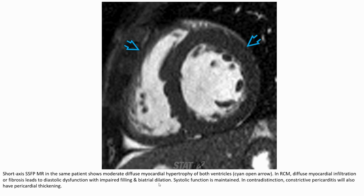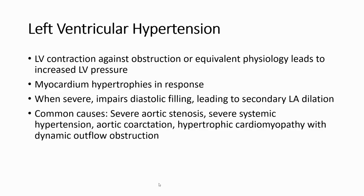Distinction: constrictive pericarditis will also show bi-atrial dilatation. Left ventricular hypertension: obstruction or equivalent physiology leads to increased left ventricular pressure and myocardial hypertrophy in response. When severe, this leads to diastolic dysfunction and secondary left atrial dilatation. Common causes include severe aortic stenosis, severe systemic hypertension, aortic coarctation, and hypertrophic cardiomyopathy with dynamic outflow obstruction.